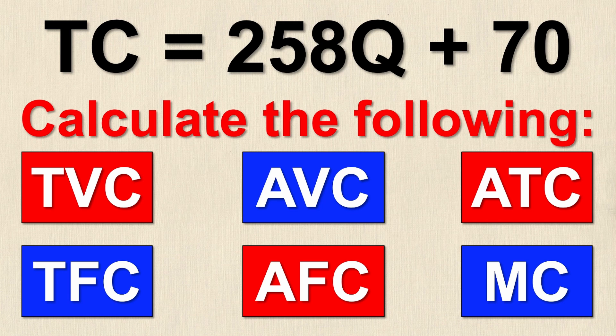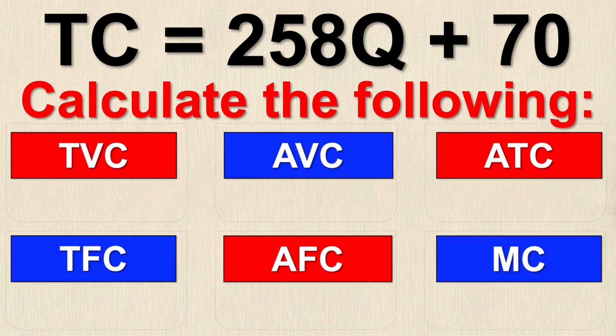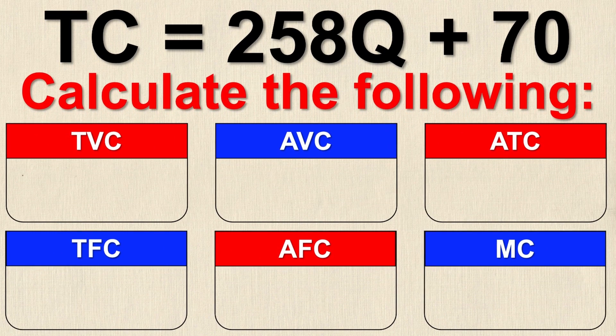Even if you're not given the quantity, you can calculate all of the following six types of costs just given the original total cost equation. Here you can see the total cost equation is: total cost equals 258Q, where Q is the quantity produced, plus 70.